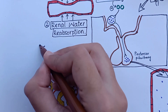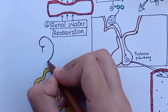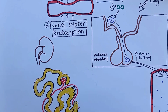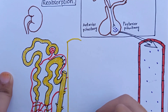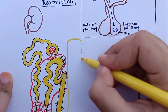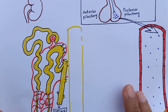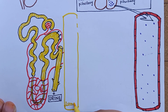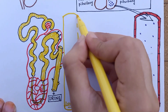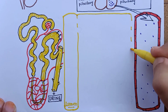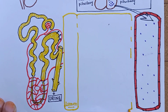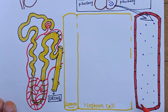From the blood, ADH is transported to the kidneys. In the renal nephron, ADH increases water permeability, as mentioned, in the distal convoluted tubule, collecting tubule, and collecting duct to conserve body water.